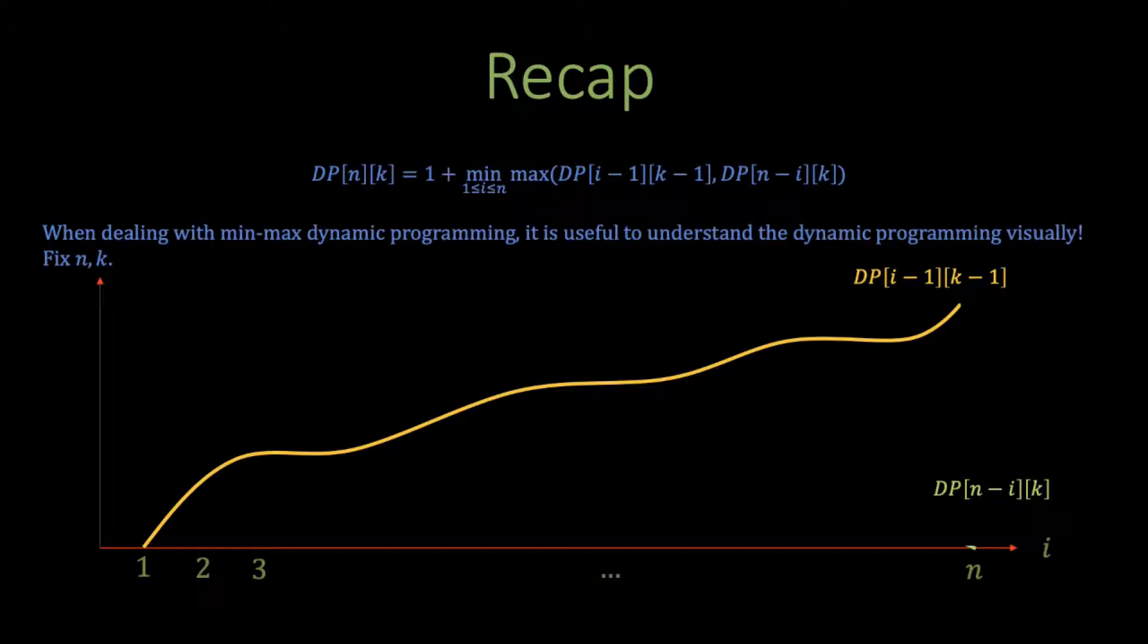Now, if you're following so far, I'm sure you can deduce the same thing. Since k is fixed, the number of eggs we have access to doesn't change with i. However, as i increases, n-i decreases, which means that as i increases, we're searching over fewer and fewer floors. This means that DP[n-i][k], or the number of moves required to find f in n-i floors with k eggs, either decreases or stays the same. In other words, it's non-increasing.